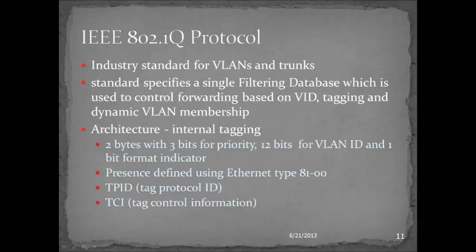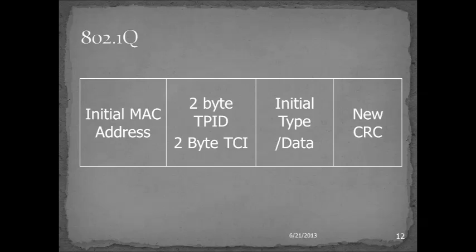The industry standard trunking protocol is 802.1Q. If you are going to connect different vendor switches together, or even same vendor, it's a really good idea to use 802.1Q — it'll be understood everywhere. 802.1Q uses the concept of internal tagging, so the Ethernet frame has a different protocol type that it's encapsulating. Our primary use is the VLAN tags, and our secondary use for 802.1Q is that you can actually prioritize traffic. When you insert the internal tags, the frame has changed, so another CRC has to be calculated — that's different than the original frame generated by PC1.